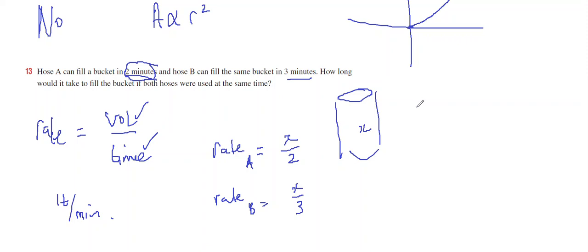So if both are going to be filled at the same time, then it's going to be rate A plus rate B, because we have both hoses going in the bucket at the same time. So it's X over 2 plus X over 3, which is 3X plus 2X all over 6, which is 5X over 6.